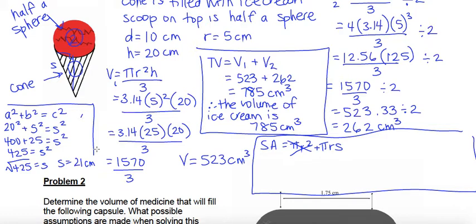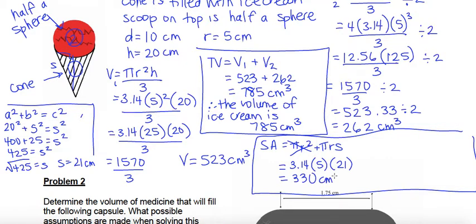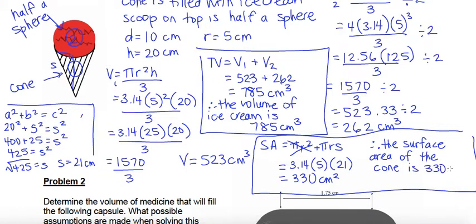Now that we've determined the slant height, we can find the surface area of just the outside of the cone (not including the top). So: 3.14 times radius 5 times slant height 21 gives approximately 330. Therefore, the surface area of the cone is 330 centimeters squared.